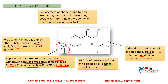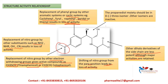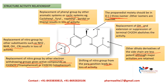Regarding the phenyl group: replacement of the phenyl group by other aromatic or cyclic systems such as cyclohexyl, furyl, naphthyl, pyridyl, or thienyl will result in loss of activity. For the propanediol moiety: it should be in the D-threo isomer; other isomers are inactive. Replacement of the hydroxyl groups or extension or suppression of the terminal CH2OH group abolishes the activity.